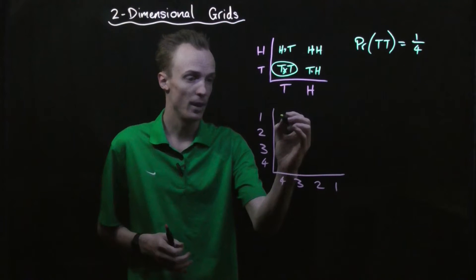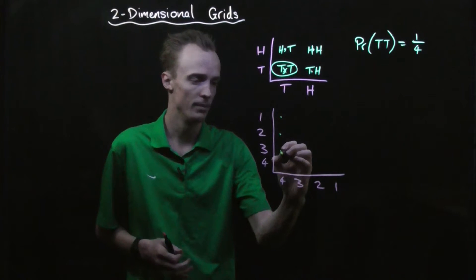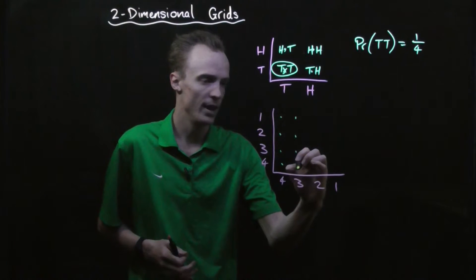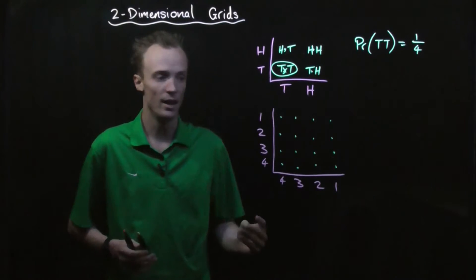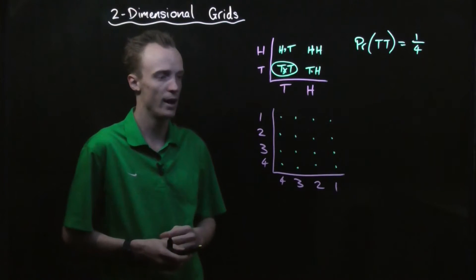We could do the exact same thing and put a dot where there's an outcome. So a one, four, a two, four, and then just keep going until we've listed all of the outcomes. So as you can see here, I've got a four by four grid, so there are 16 total outcomes.